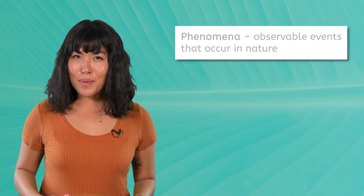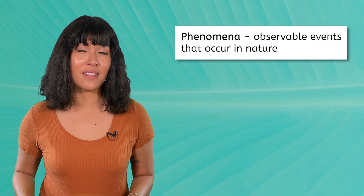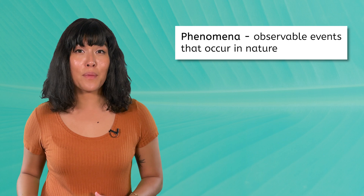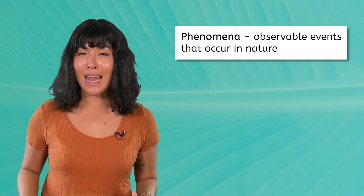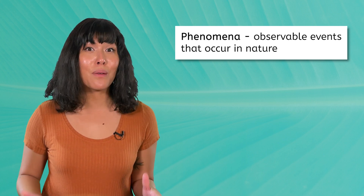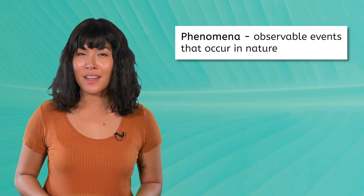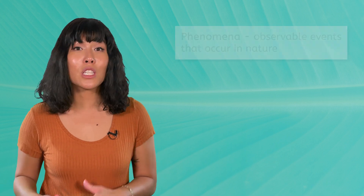Let's take a moment to brainstorm some examples of weather phenomena that occur in the atmosphere. Phenomena are observable events that occur in nature. So weather phenomena are just weather events that happen naturally and can be observed with the five senses, like a gust of wind or a sprinkle of rain. Pause the video here and list as many examples of weather phenomena as you can think of. Remember, phenomena can be observed by all five senses.